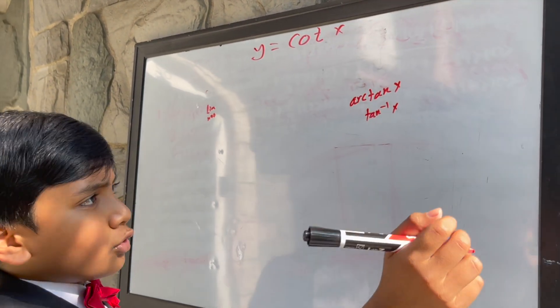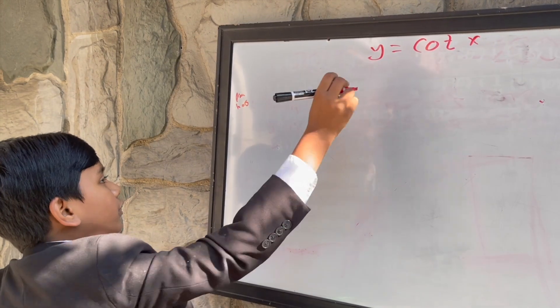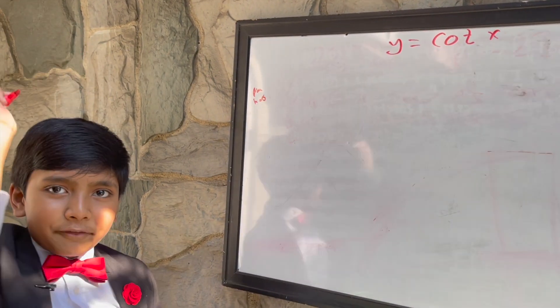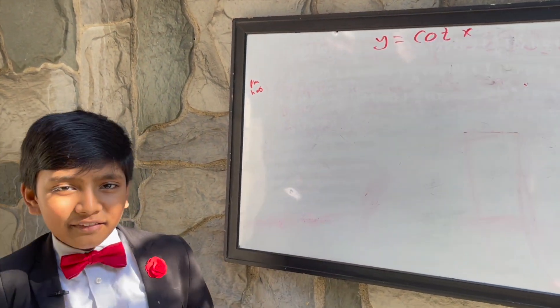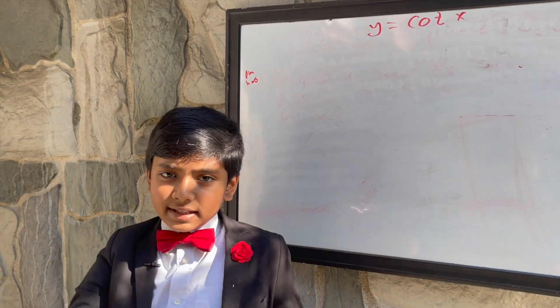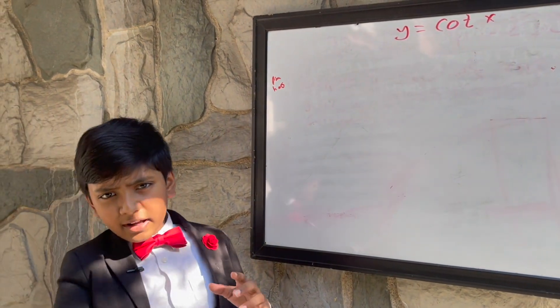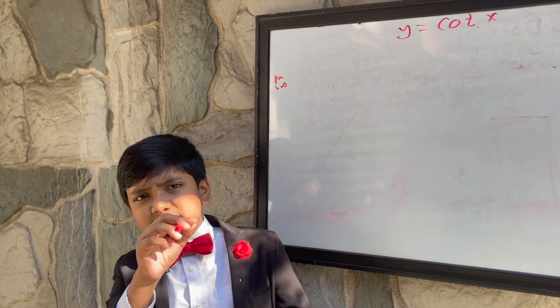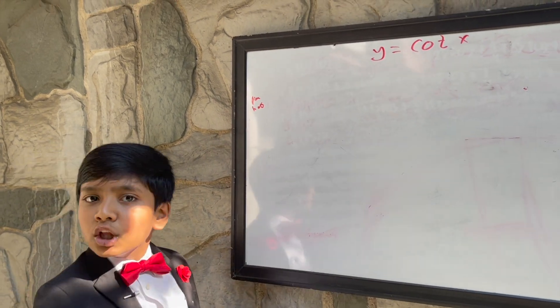Or sine, or cosine, or blah blah blah. 1 over tan of x. Ready, mi amigo? Tan of x is actually sine of x over cosine of x. So 1 over tan of x would flip that fraction to be cosine of x over sine of x.